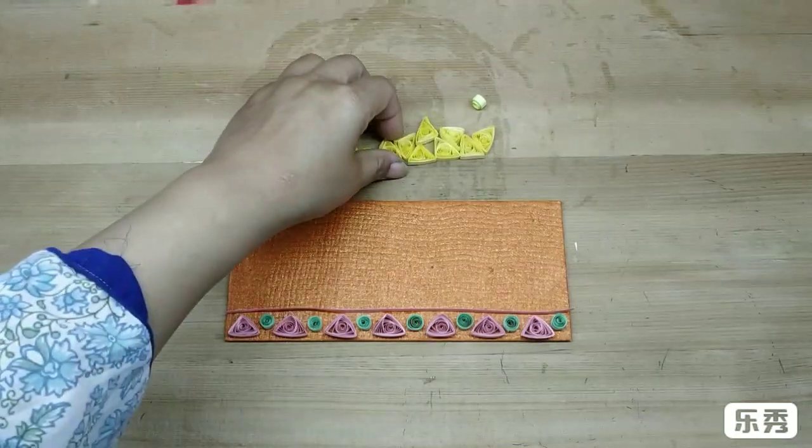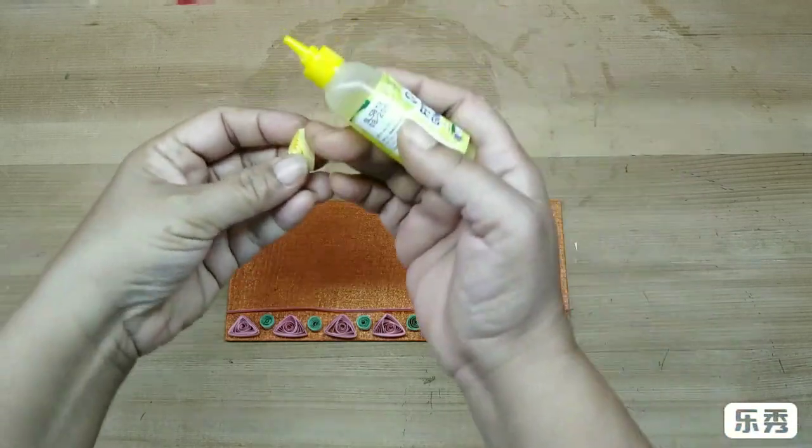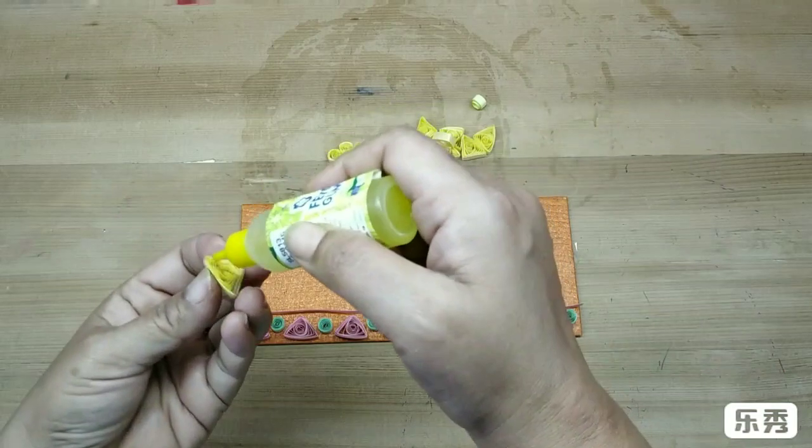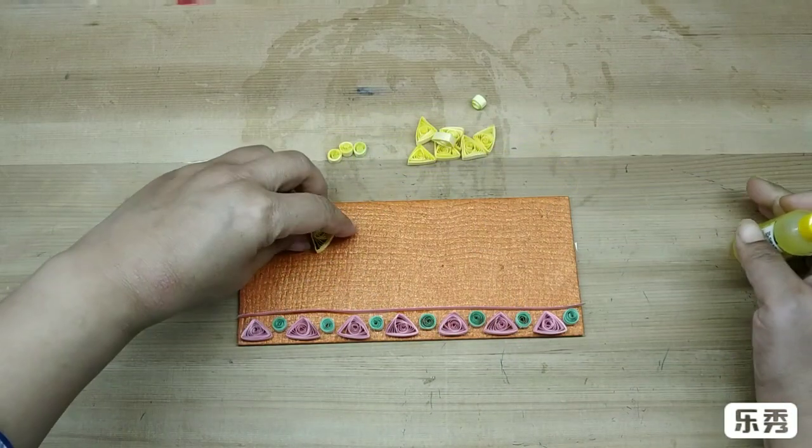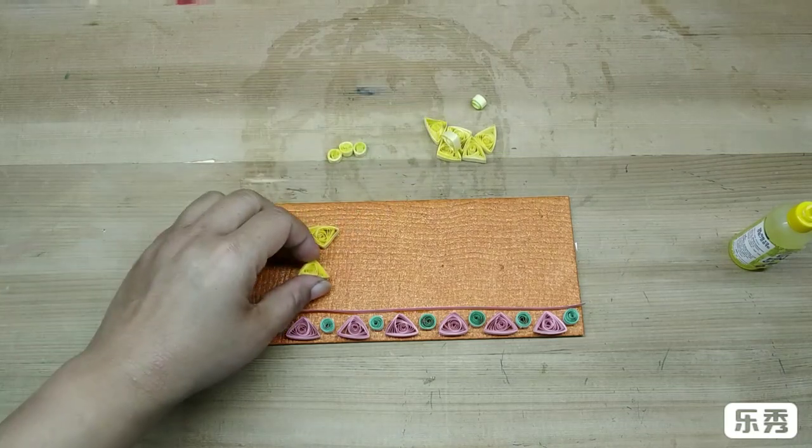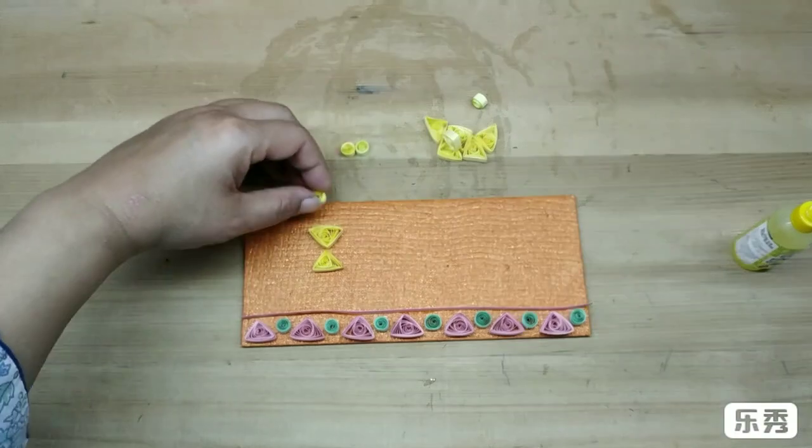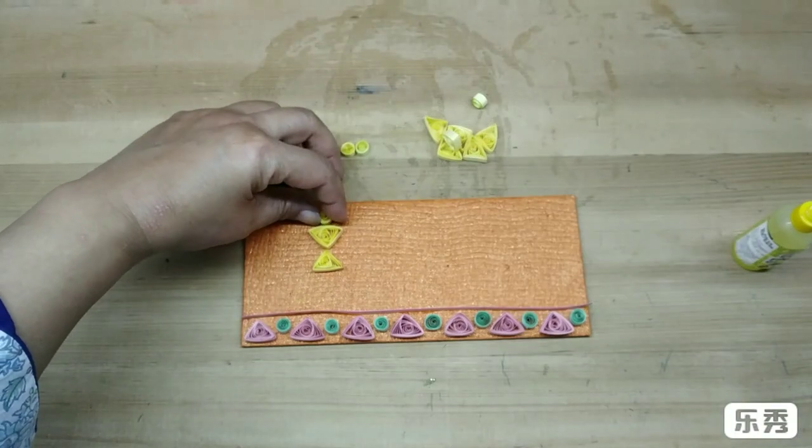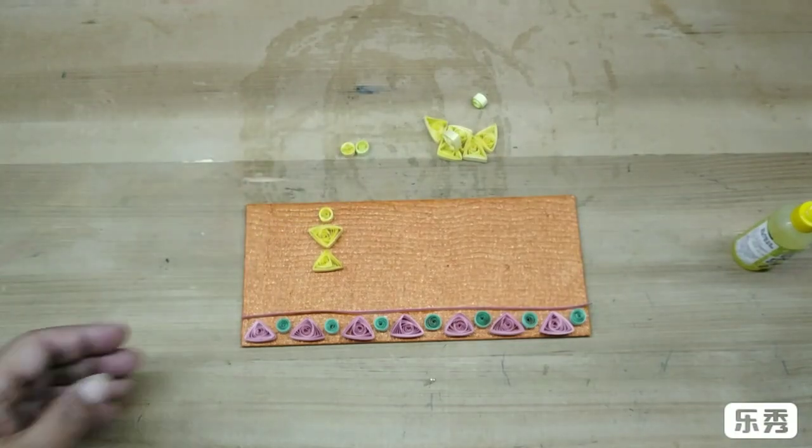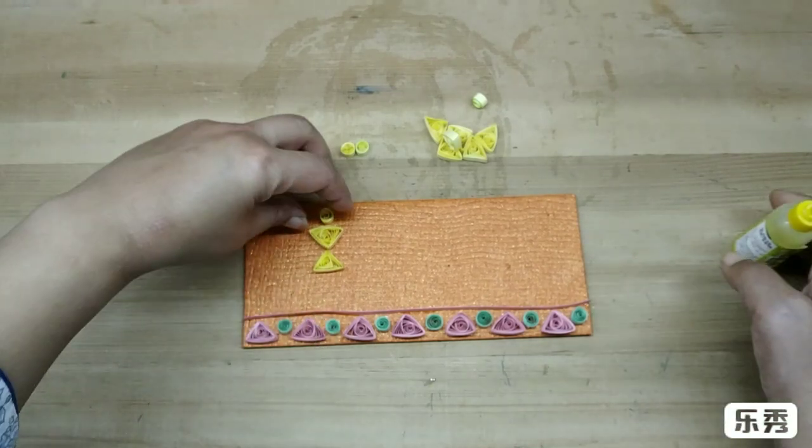Now I will take these yellow triangles. So first just sort of arrange them to see how tall you want them. So I am going to now stick them.